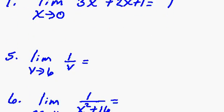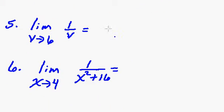All right, looking at 5 and 6, so we take the limit 1 over v as v approaches 6, so we just do direct substitution again, and we have 1 sixth.